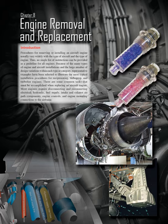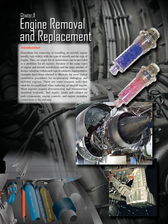Chapter 8: Engine Removal and Replacement Introduction. Procedures for removing or installing an aircraft engine usually vary widely with the type of aircraft and the type of engine. Thus, no single list of instructions can be provided as a guideline for all engines. Because of the many types of engine and aircraft installations and the large number of design variations within each type or category, representative examples have been selected to illustrate the most typical installation procedures for reciprocating, turboprop, and turbofan engines.